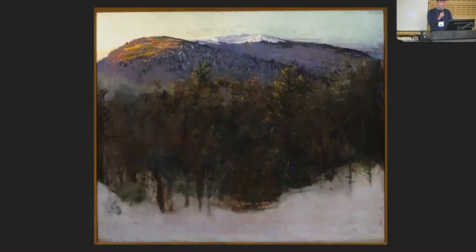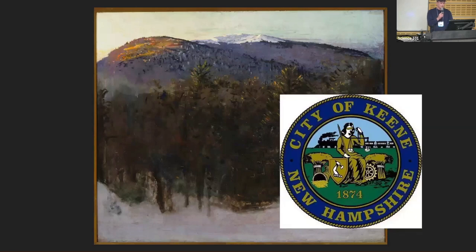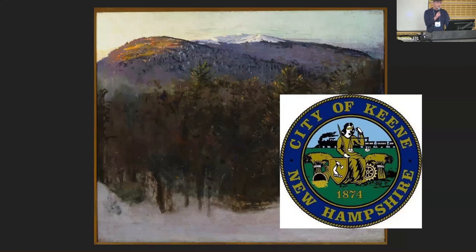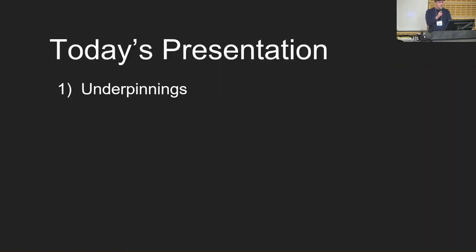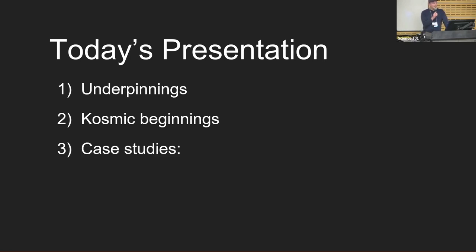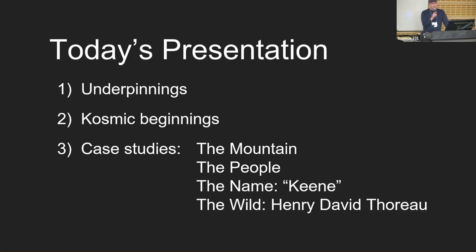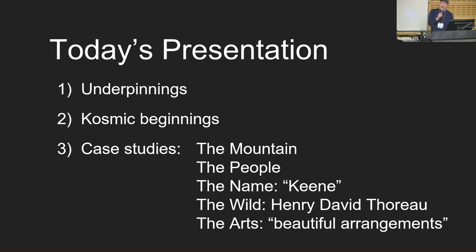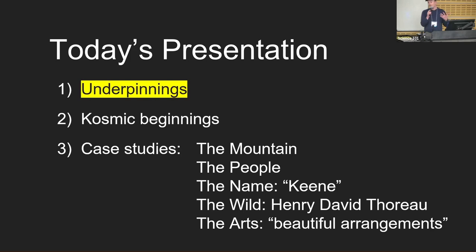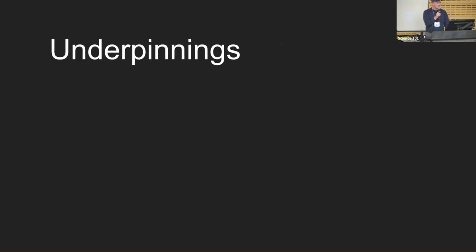This is a beautiful image of Mount Monadnock painted by Abbott Thayer, an accomplished artist who lived in Dublin — and of course, the city of Keene's official seal. Today's presentation will cover underpinnings, a very brief cosmic beginnings section, and then five case studies: the mountain, the people, the name Keene, the wild (Thoreau will help us with that), and the arts.